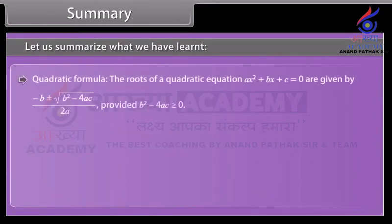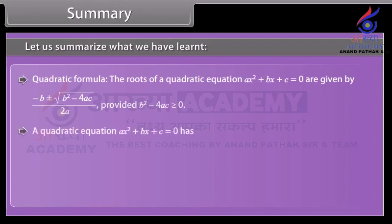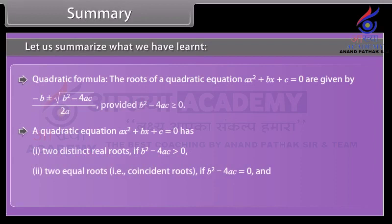Quadratic formula. The roots of ax squared plus bx plus c equals zero are given by x equals (minus b plus or minus square root of b squared minus 4ac) over 2a, provided b squared minus 4ac is greater than or equal to zero. A quadratic equation has: two distinct real roots if b squared minus 4ac is greater than zero; two equal (coincident) roots if b squared minus 4ac equals zero; and no real roots if b squared minus 4ac is less than zero. Thank you.